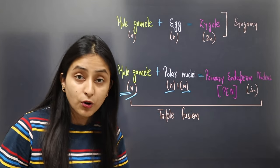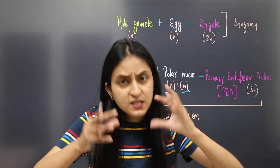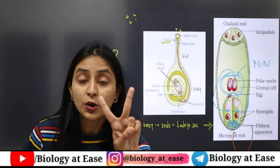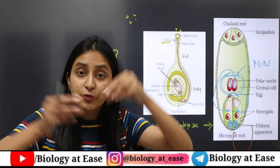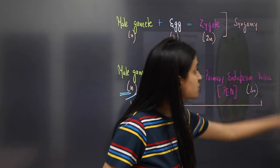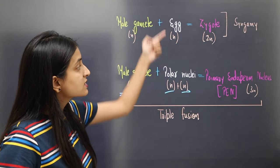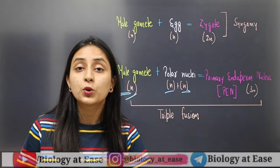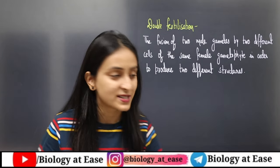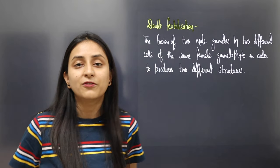Double fertilization refers to a process where two male gametes fuse with two different structures of the same female gametophyte - the same embryo sac - leading to the formation of two different structures. One structure formed is the zygote, and the other is the primary endosperm nucleus. This is known as double fertilization. The two sub-processes involved are syngamy and triple fusion, and together they make up double fertilization.